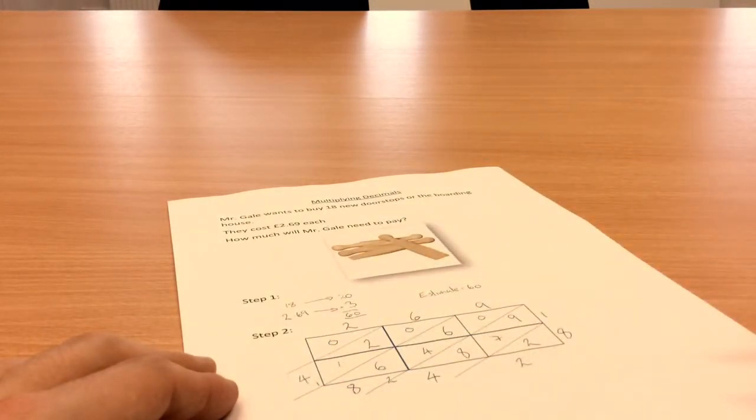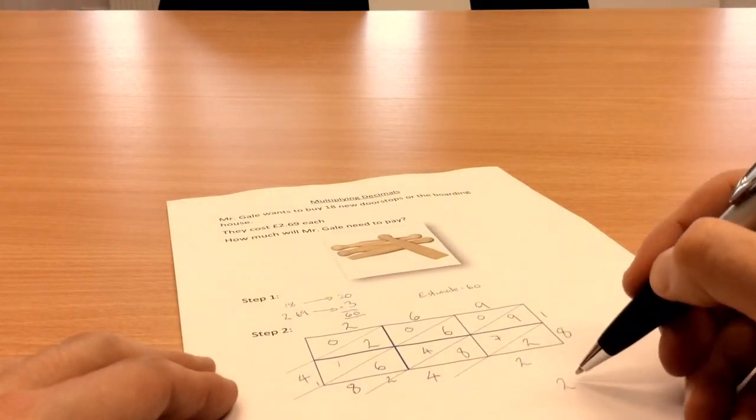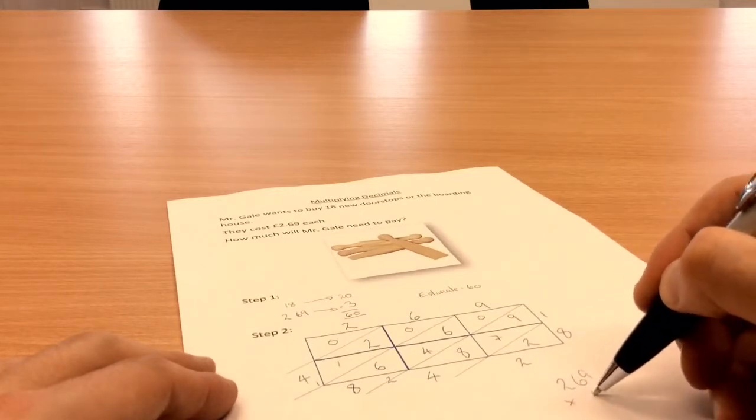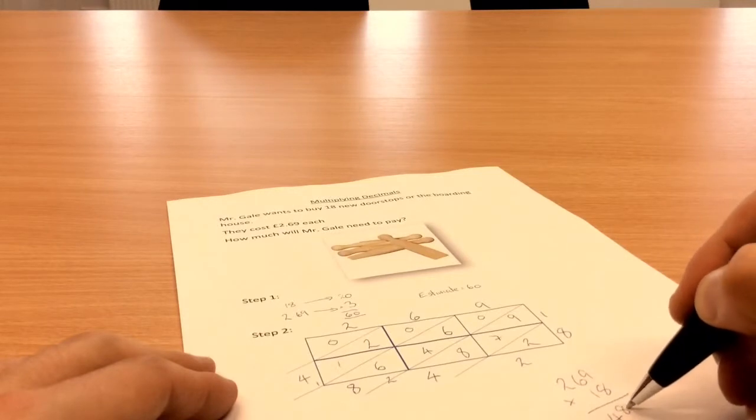4, 8, 4, 2. So we know that 269 times by 18 is 4, 8, 4, 2.